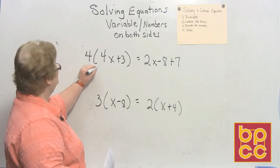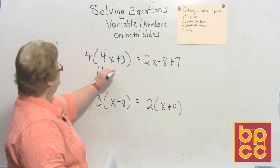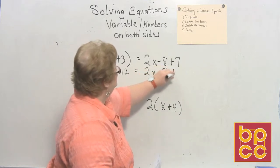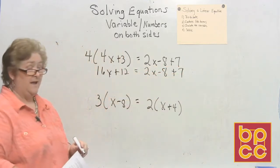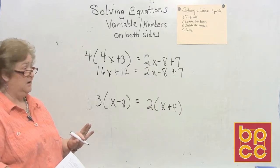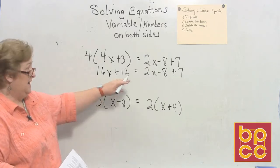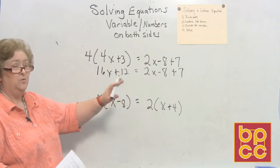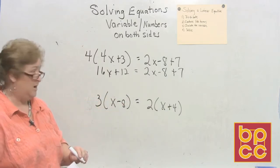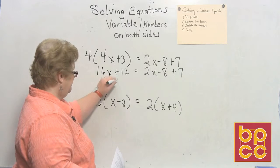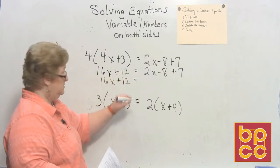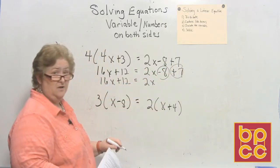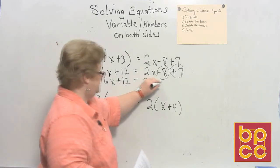We have 4 times 4x is 16x plus 12 equal 2x minus 8 plus 7. Now I still can't solve this yet because even though this looks pretty good on this side, I have a couple of numbers over here that need to be combined. So let me rewrite it again with everything combined so I can begin to work the problem. The 16x plus 12 will remain the same. The 2x will be the same, but I need to combine my negative 8 and my positive 7, and a negative 8 and a positive 7 is a negative 1.